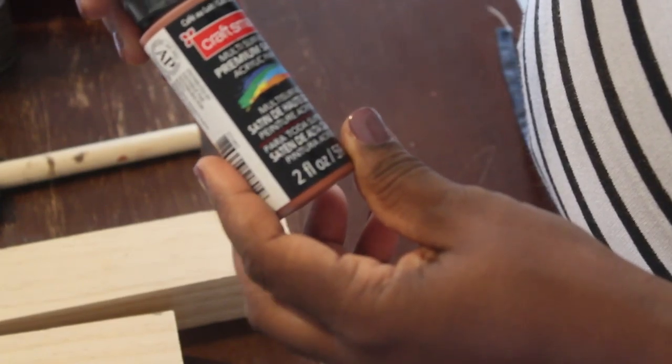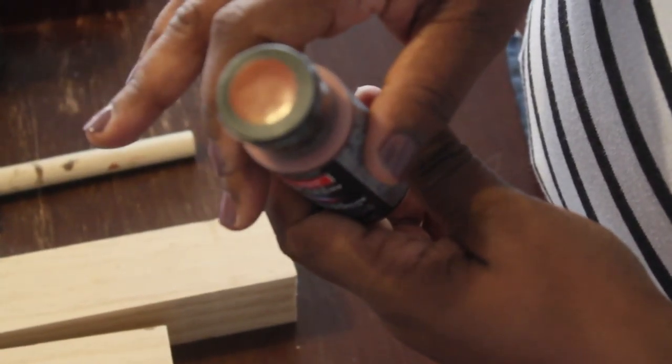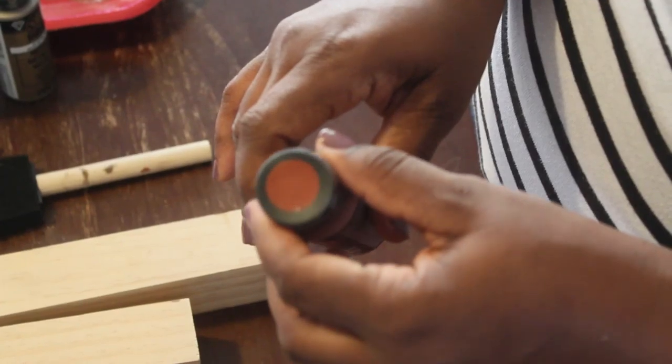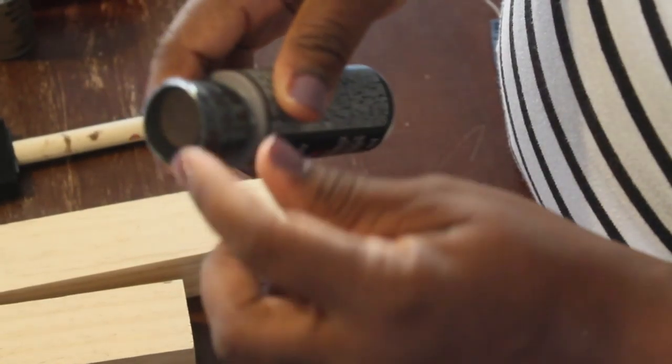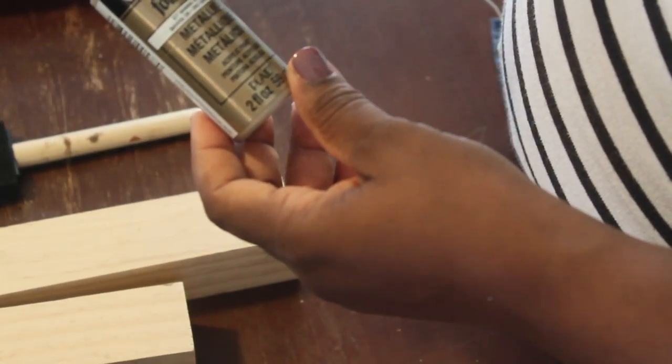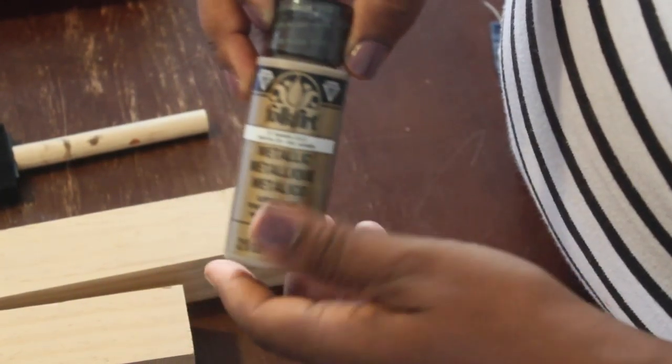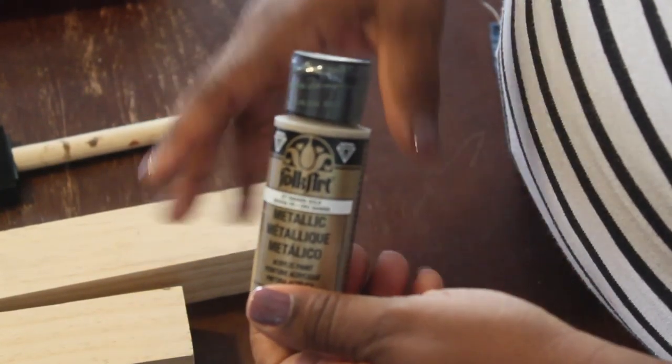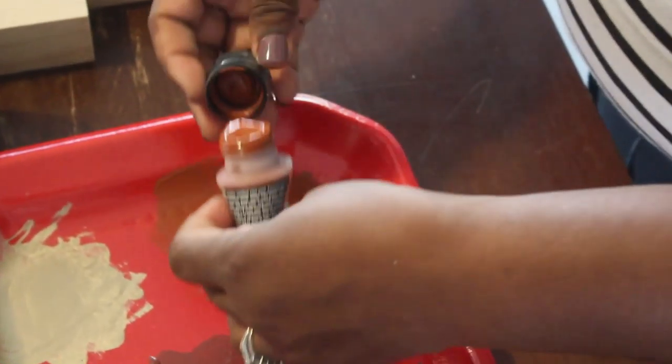Next it's time to paint. For this particular project I wanted to use fall colors. Fall happens to be my favorite season and I just love the richness of the colors. So I used four different colors and I used a premium satin acrylic paint. This one is by Craft Smart and I also used one by Folk Art. I didn't want a shiny finish which is why I used the satin look. I used an orange, I used a brown, I used a red, and then I used a metallic gold because I did want to give it a little bit of richness to kind of offset those other fall colors. And they will pair very well together.